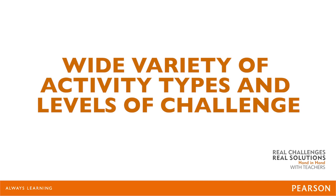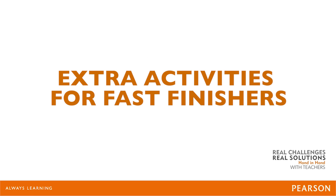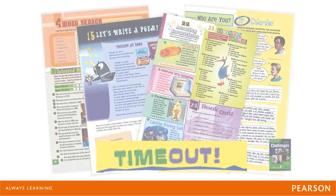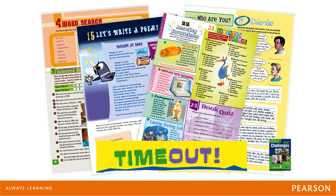Here's what I do to make lockstep teaching as effective as possible with mixed ability groups. As I mentioned earlier, I ensure there are a wide variety of activity types and levels of challenge. I also make sure I always have extra activities ready for early finishers. A good course will come with plenty of these. Here, for example, are some activities from the time out section found at the back of New Challenges — ideal for students who finish before their peers and would otherwise sit twiddling their thumbs and losing focus.